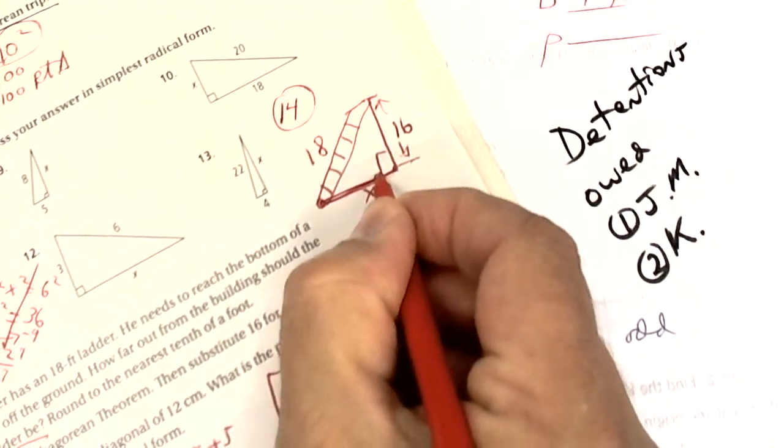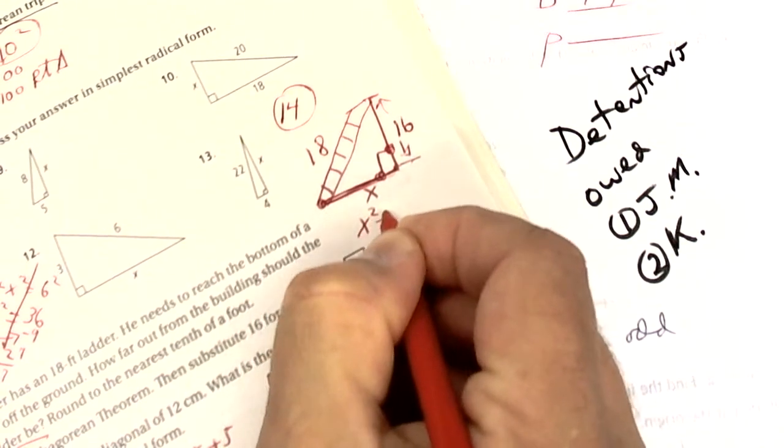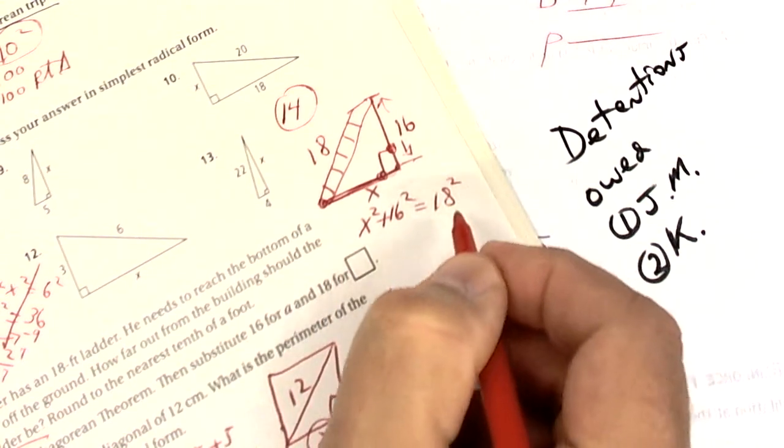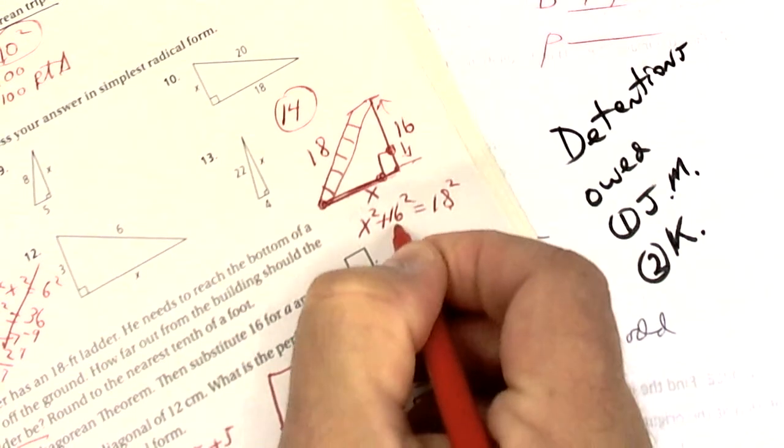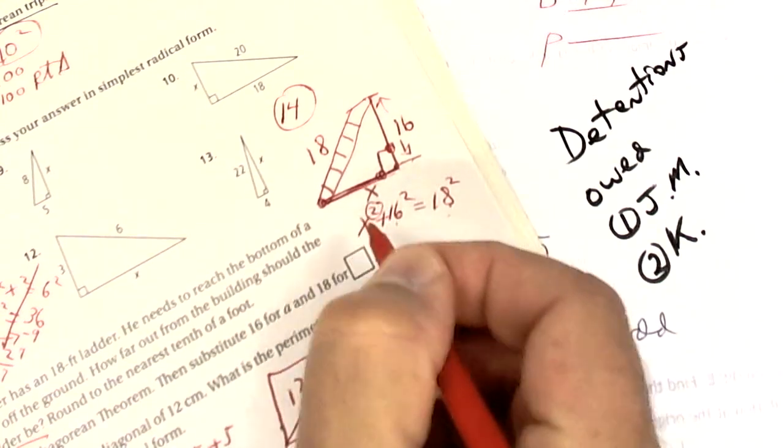to say a squared plus b squared equals c squared. You're going to square this and square this and then subtract, and then take the square root one time.